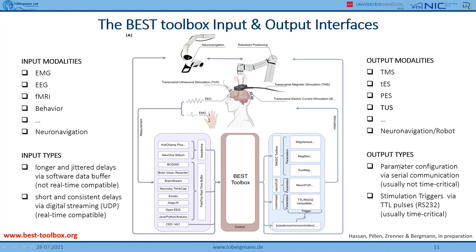For configuration of stimulation parameters such as density and frequency, serial communication is used, which is slightly slower, but hardware delays on the device side make this acceptable. For time-critical triggering of actual stimulation, TTL pulses are used. Depending on your setup, these can be sent from the host PC or via a proper input-output module — either in the BOSS device or in low-budget open-source microcontrollers like Arduino or Raspberry Pi — that allow high-precision triggering. With this closed-loop setup, you can configure stimulation, stimulate with TMS, TES, or TUS, record EEG and MEG, receive information, make decisions, and repeat.